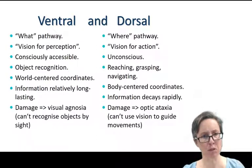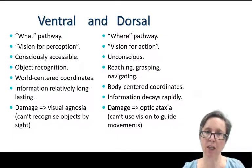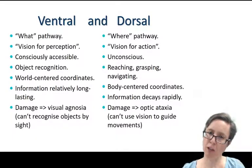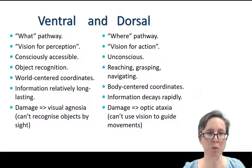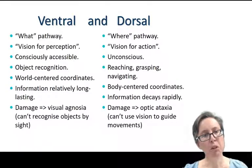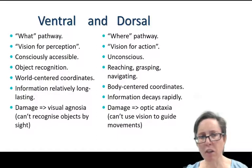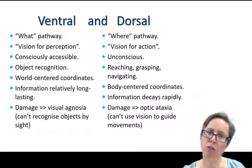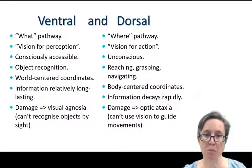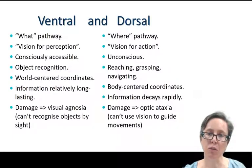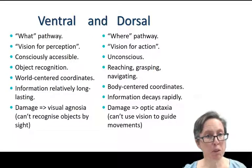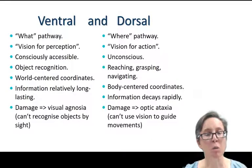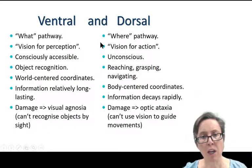Milner and Goodale suggested that framing wasn't quite right. More accurately, the ventral stream is vision for perception, whereas the dorsal stream is vision for action. You can see objects with both streams, but it's about the nature of the information you get. Importantly, information in the ventral stream is consciously accessible, whereas information in the dorsal stream is unconscious.